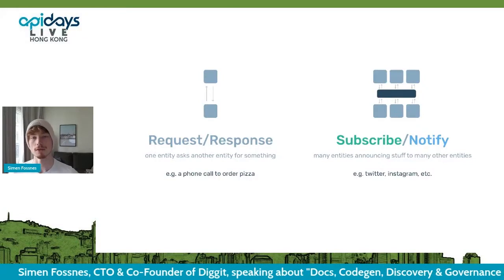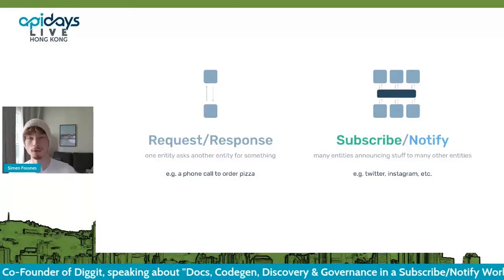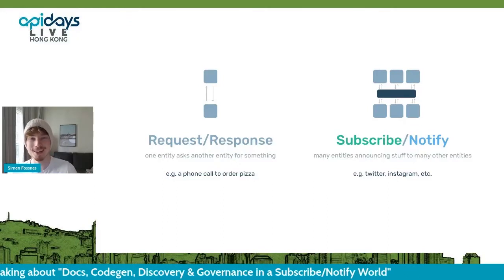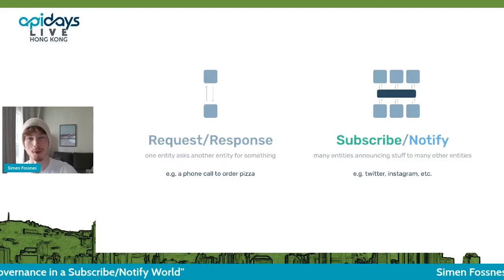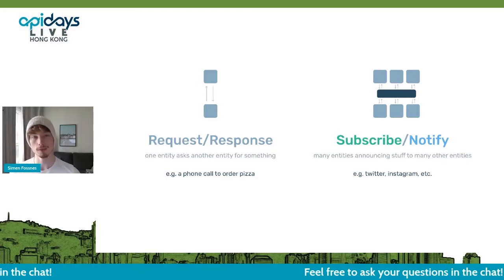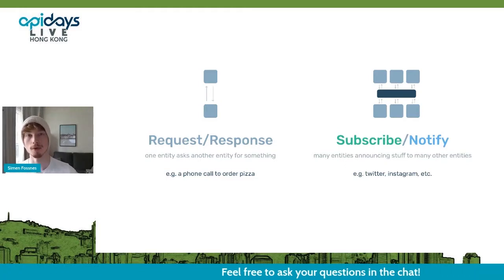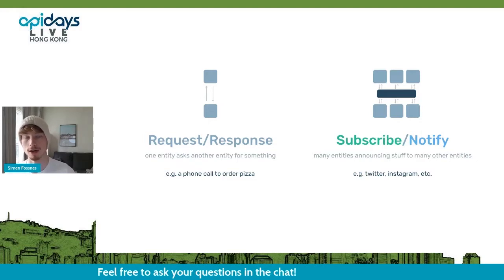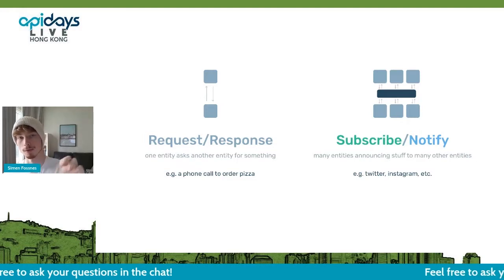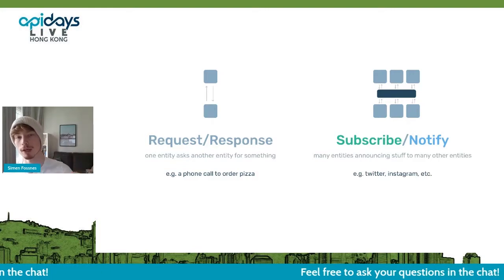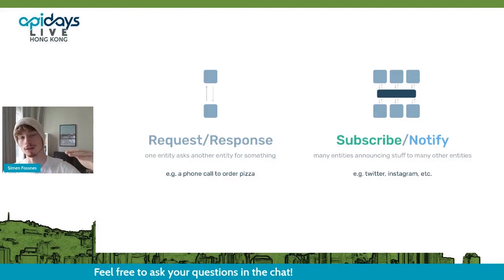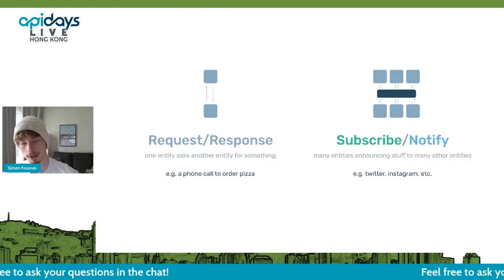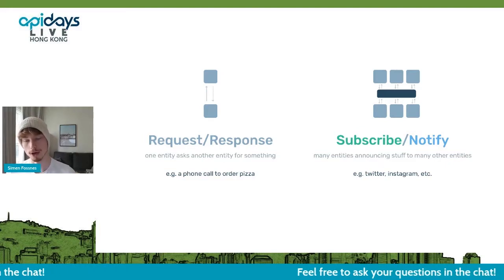If I were to exemplify this, a request response in the real world would be something like a phone call to order pizza — you request the pizza and the service gives you a response. Subscribe notify is best exemplified in modern social media, things like Twitter and Instagram, where you're subscribing to specific people you're interested in following and you then get all the notifications and announcements in your feed. That's one of the prime examples of subscribe notify in practice.